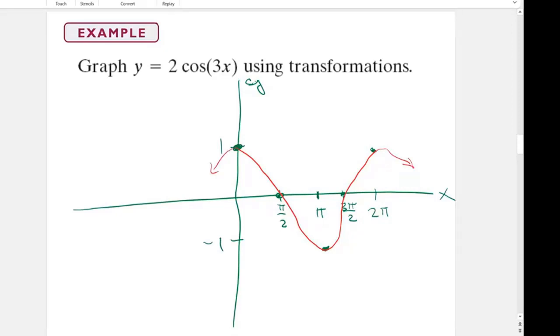So we have two different transformations happening. We have a horizontal transformation happening inside here and we have a vertical transformation happening outside there. I'm going to start, I usually start with the horizontal. It's usually the harder one, but let's start with the harder one.